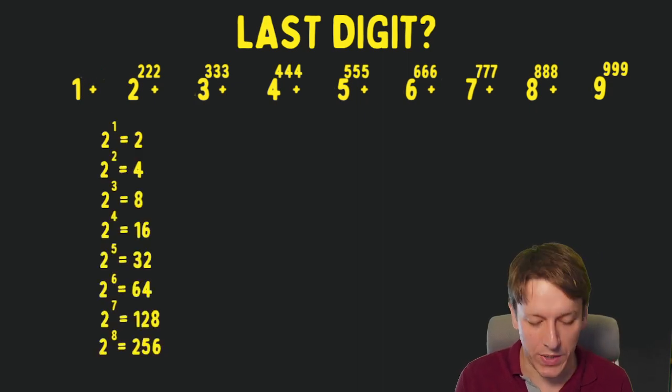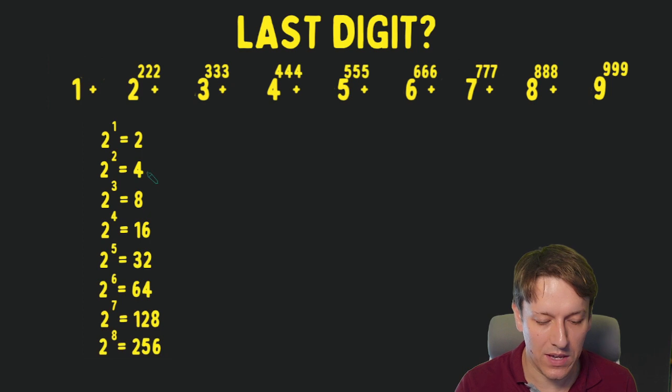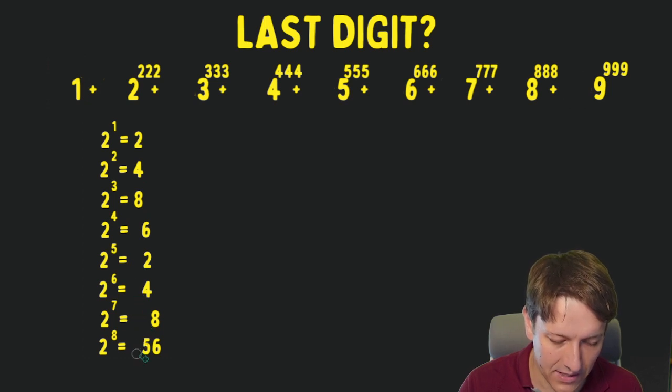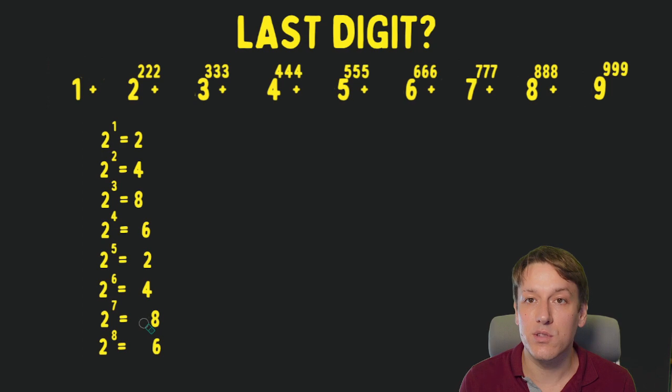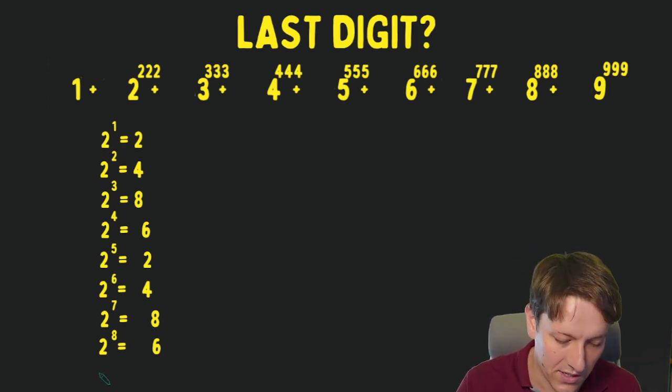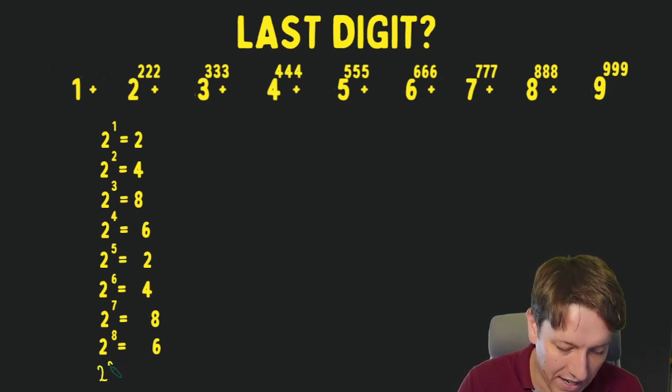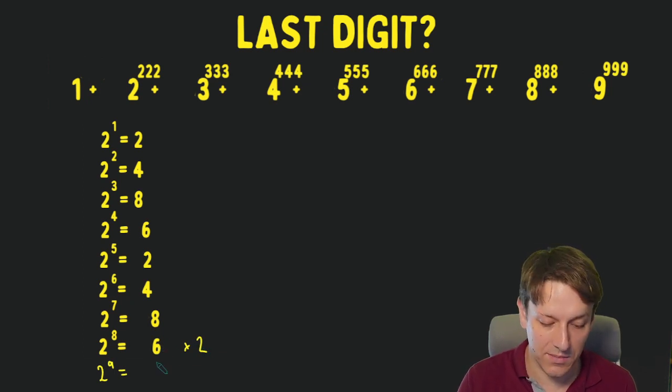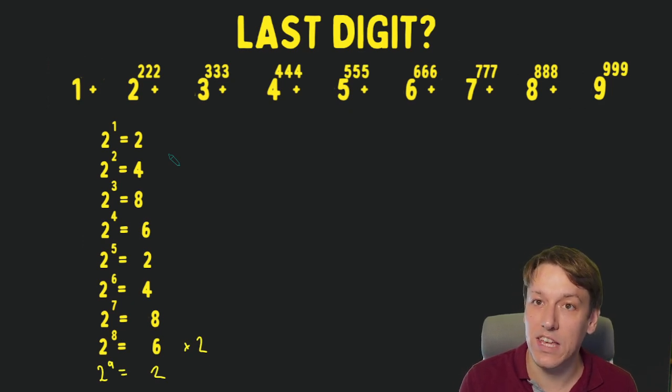Now thinking about 2 to the 222, I've just written out the first eight powers of 2 here: 2, 4, 8, 16, 32, 64, 128, and 256. And you can see the last digits form a pattern: 2, 4, 8, 6, 2, 4, 8, 6. And this pattern must repeat, because we've got this result of the product of the last digits is the last digit of the product. To form these patterns, I only need to think about the last digits.